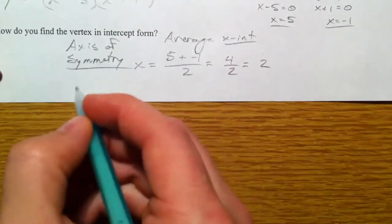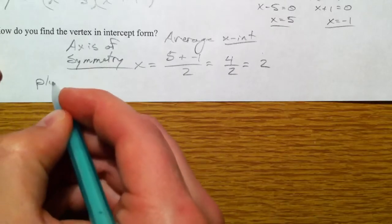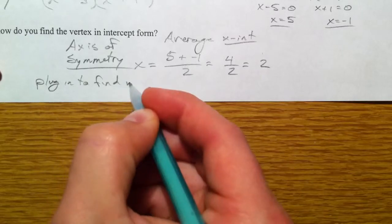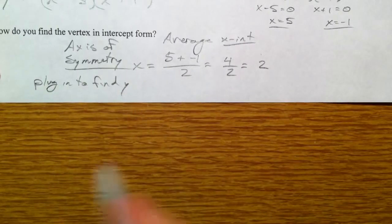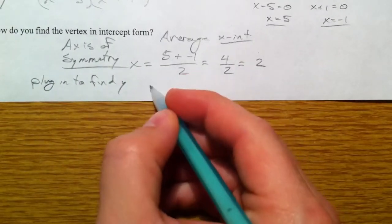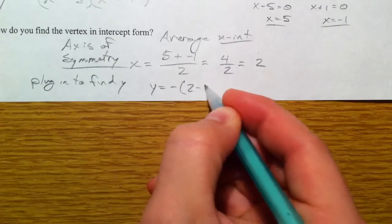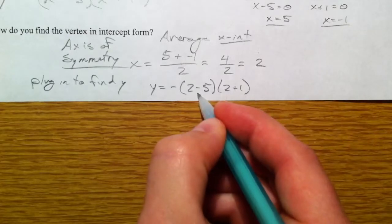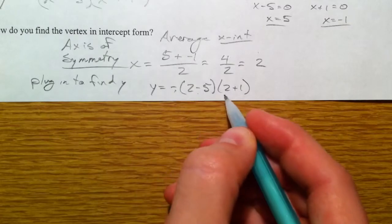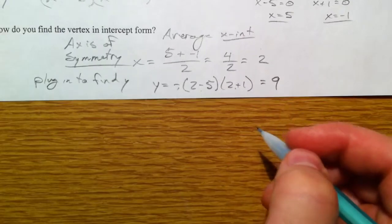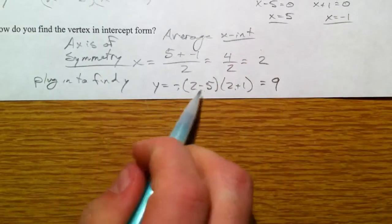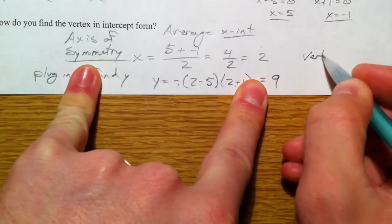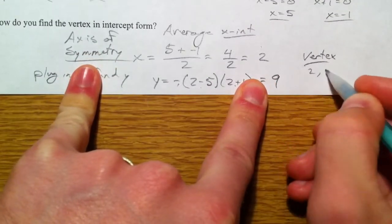And so then plug in to find y. y equals negative times 2 minus 5 times 2 plus 1. So that's negative 3 times positive 3, which equals 9. So negative 3 times 3 is negative 9, or times the negative, however you want to do it. So the vertex is 2, 9.